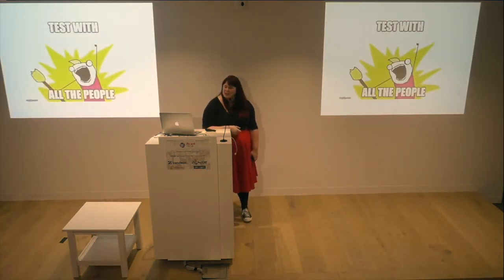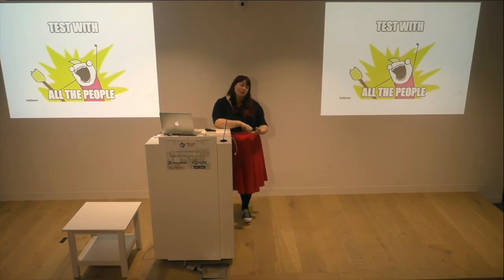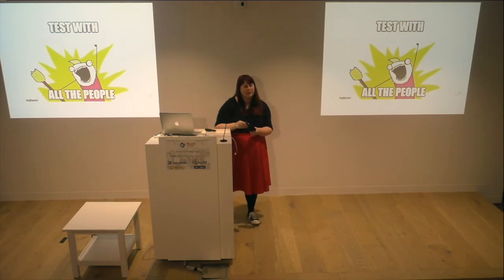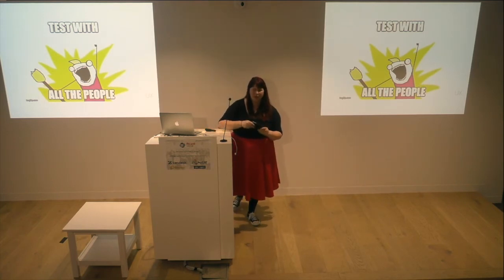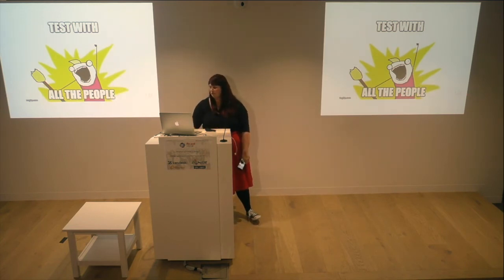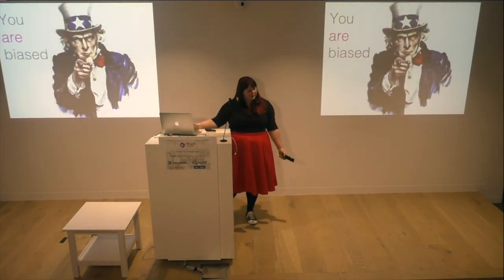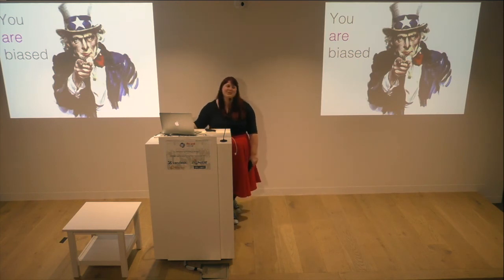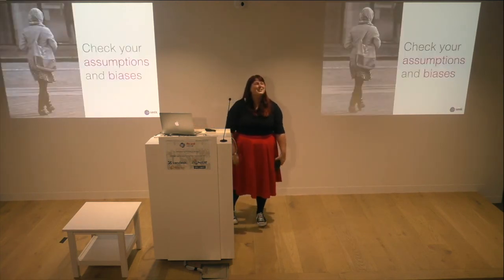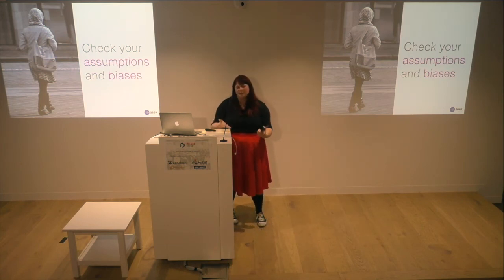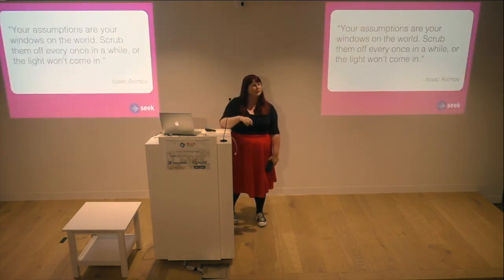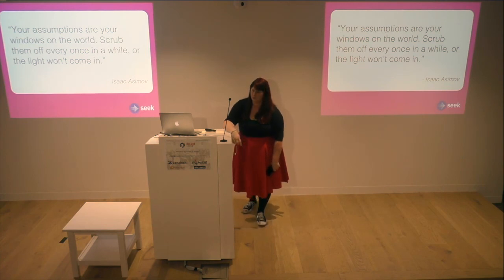Make sure to test your designs with different kinds of users — particularly people who differ from you in age, gender, race, and ability — to reveal issues early. If YouTube had tested their app with left-handed people, they would have caught that issue before it reached the general public. Remember that you are biased — we all are, unconsciously. Check your assumptions and biases; you'll be able to do this with diverse teams and by testing with real users. Your assumptions are the windows to the world — scrub them off once in a while, or the light won't come in.